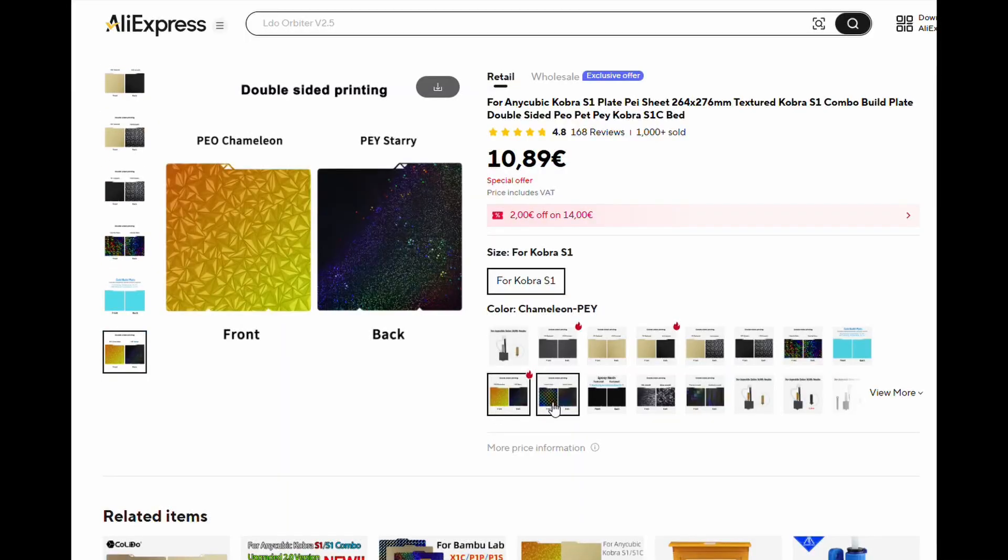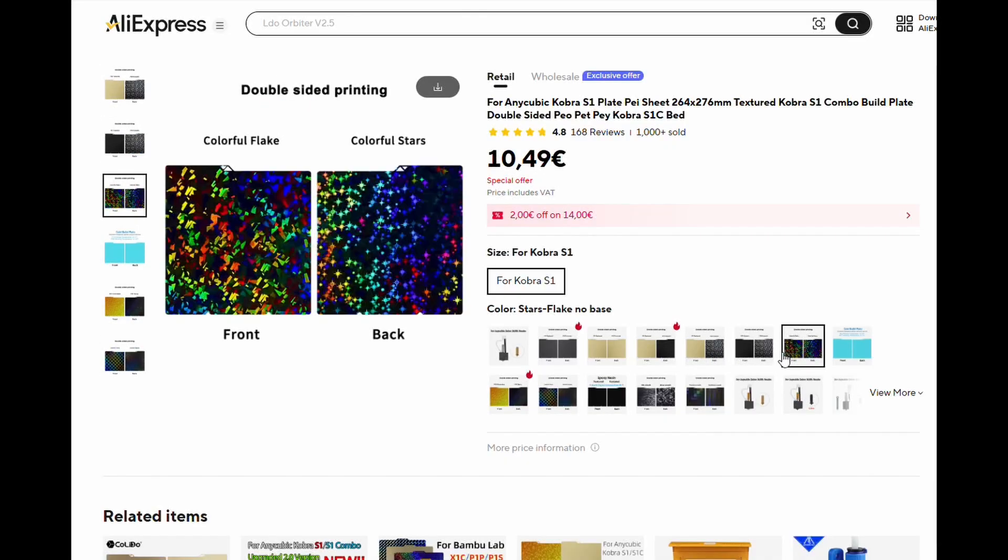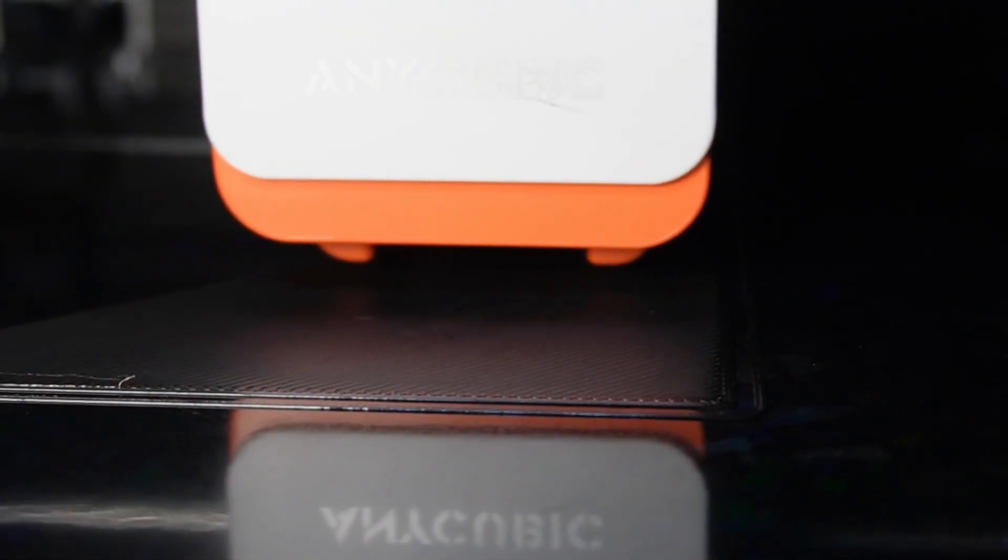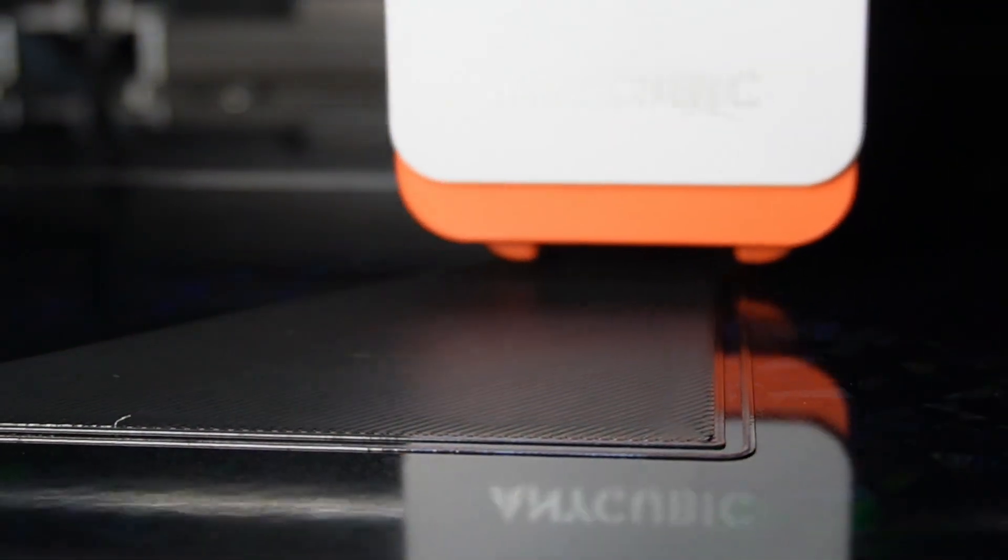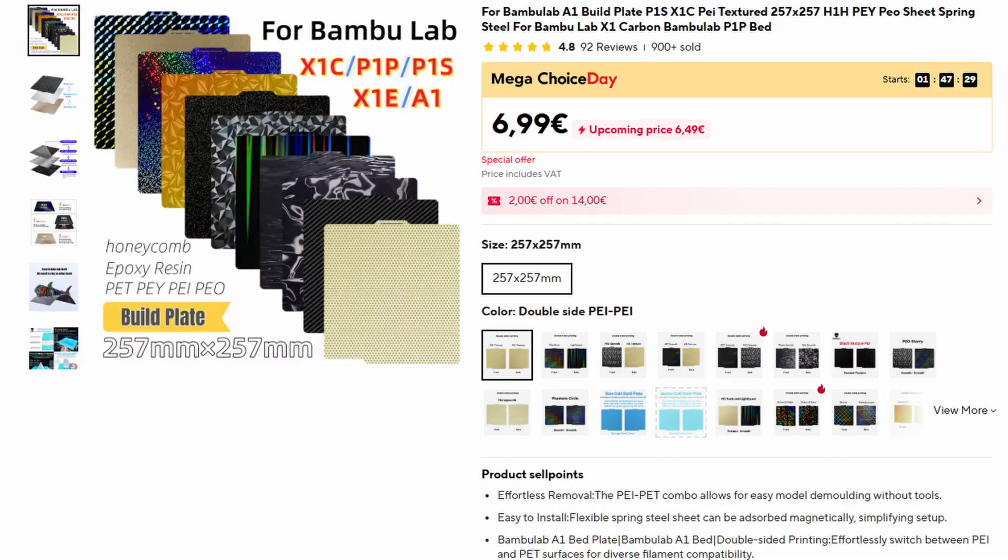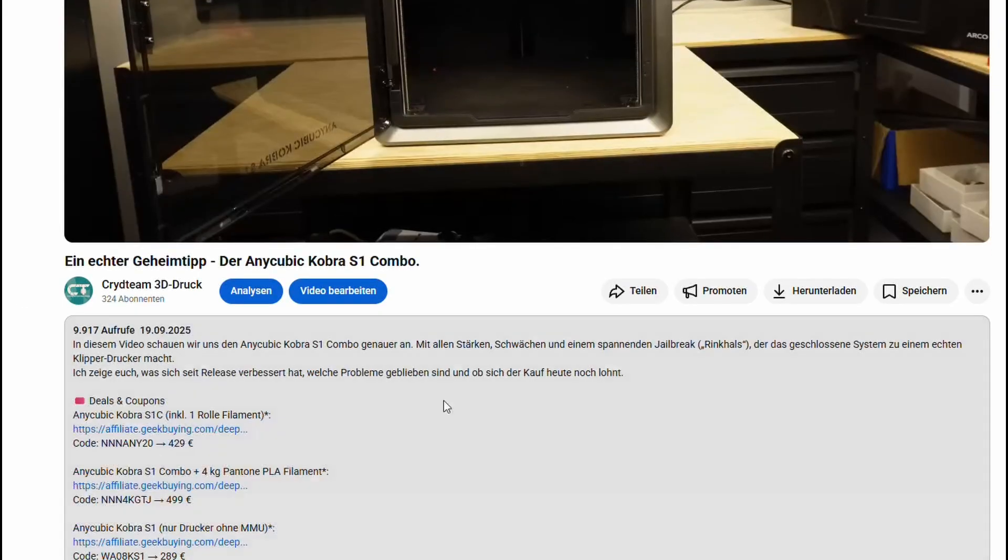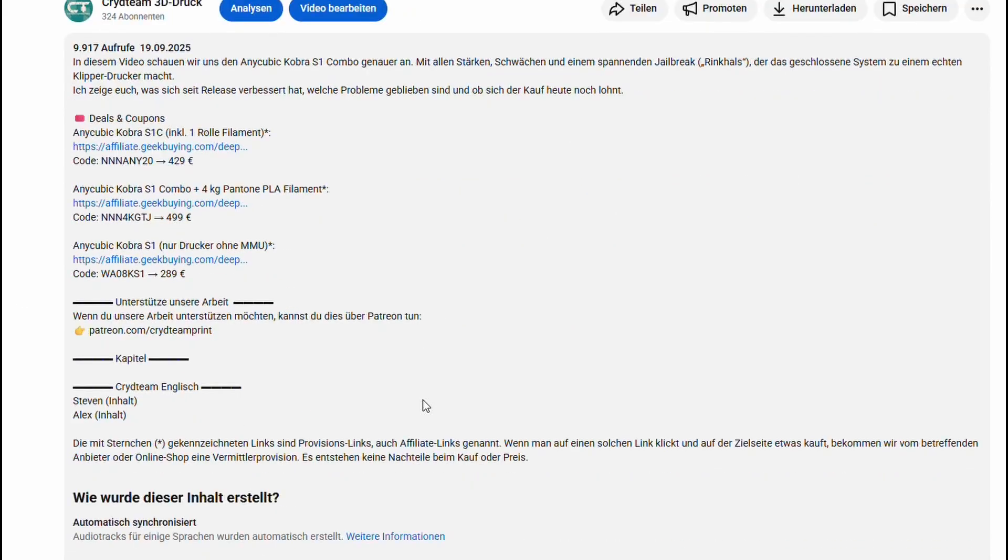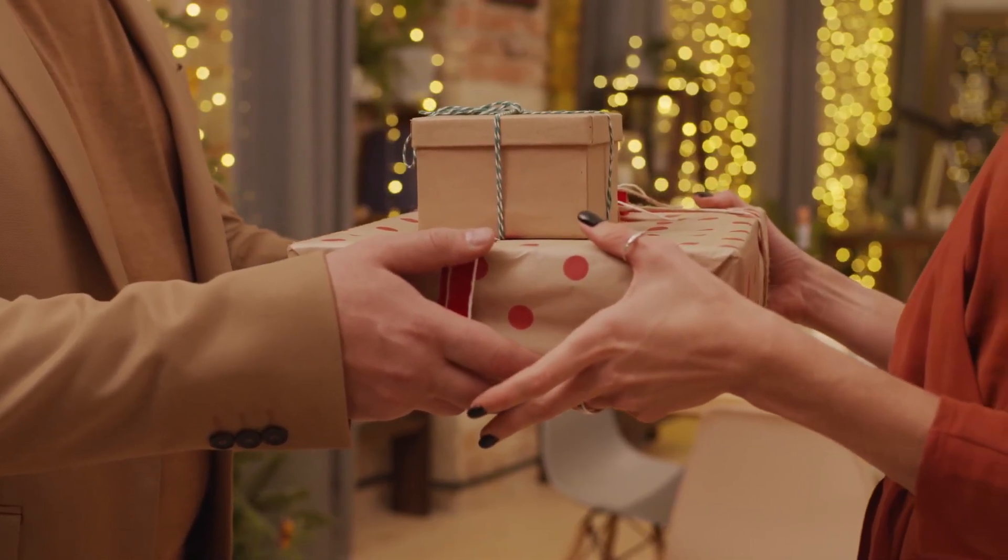Depending on the manufacturer, these plates cost between 10 to 20 euros, are almost always dual-sided and are available for most popular printers. We're using the versions for the Anycubic Kobra 2 here, but you can find these exact same surfaces for Creality, for Bamboo Lab, and other models. You will find the purchase links, as always, in the video description. Maybe it's a good gifting idea to send to your partner? Just saying, Black Friday and Christmas are coming.